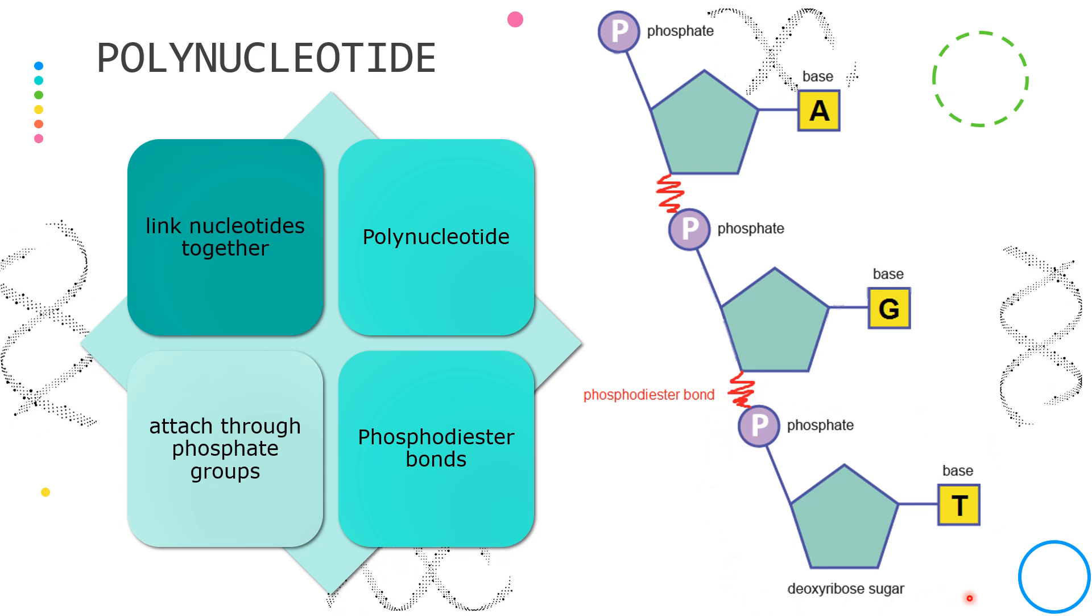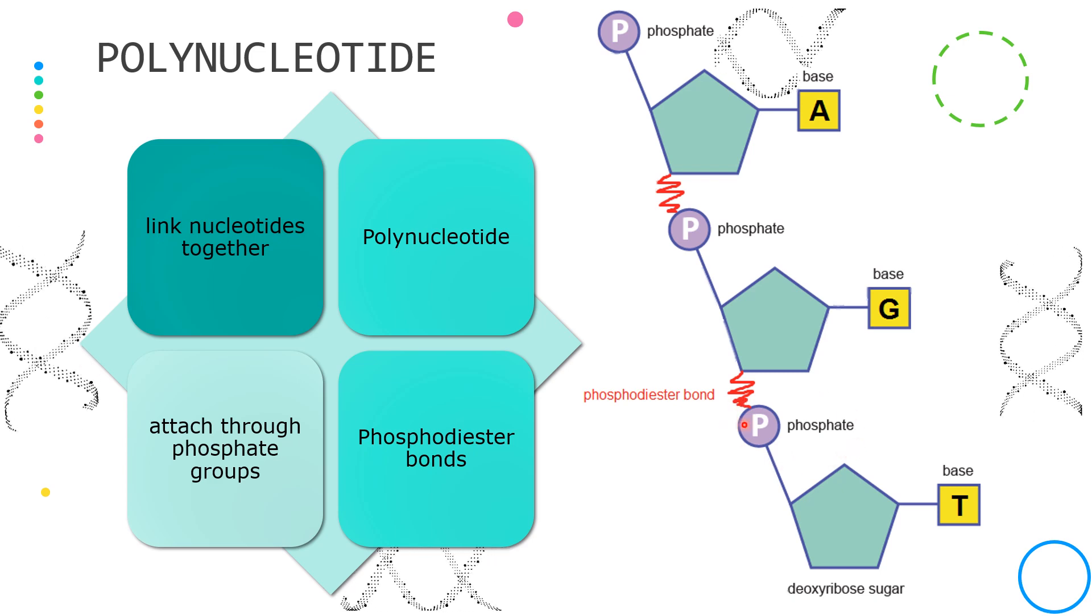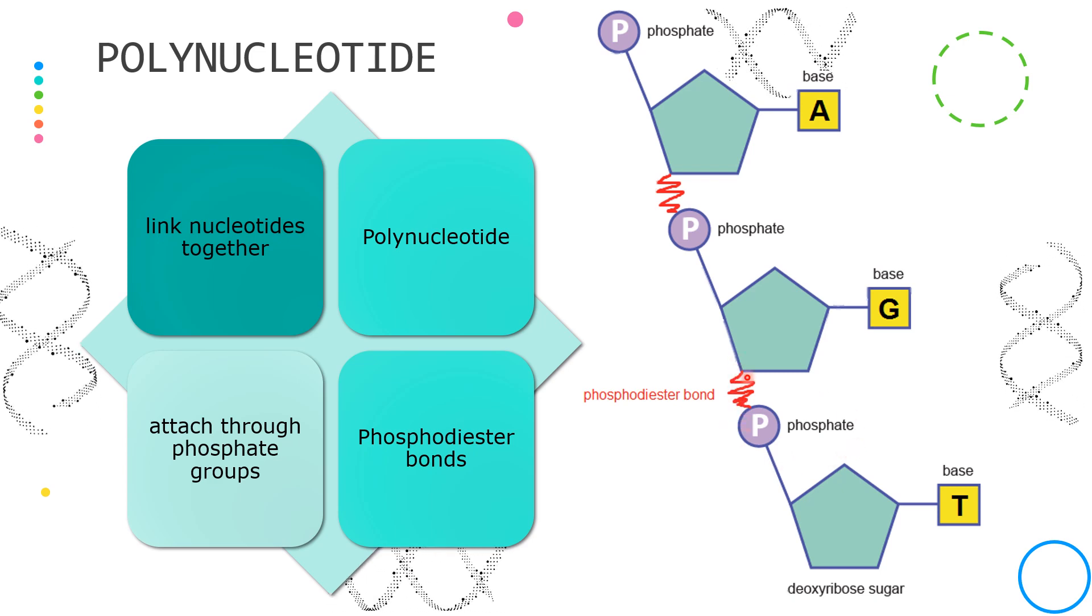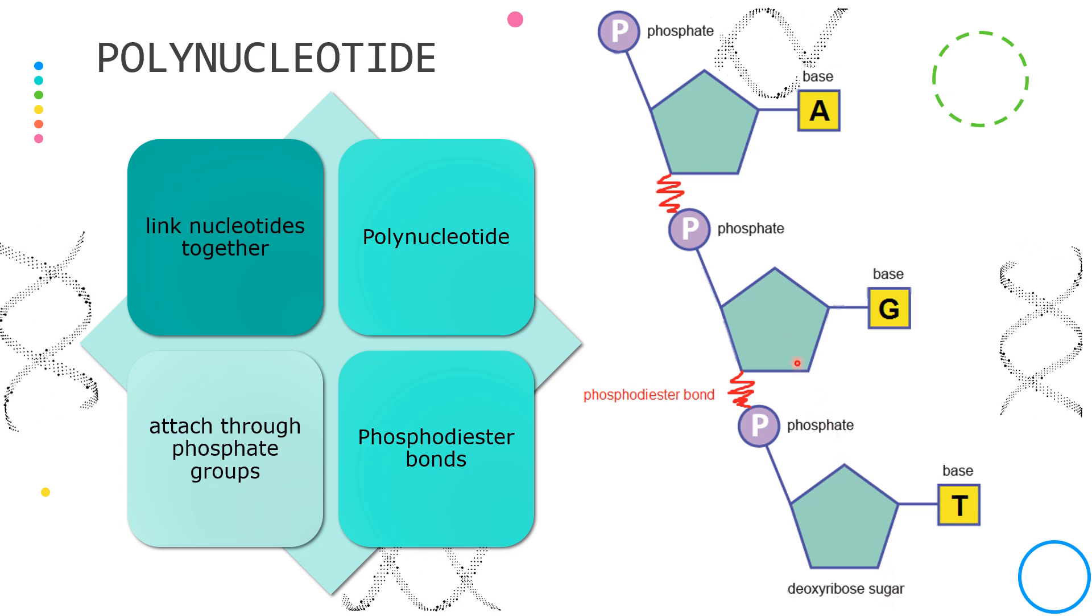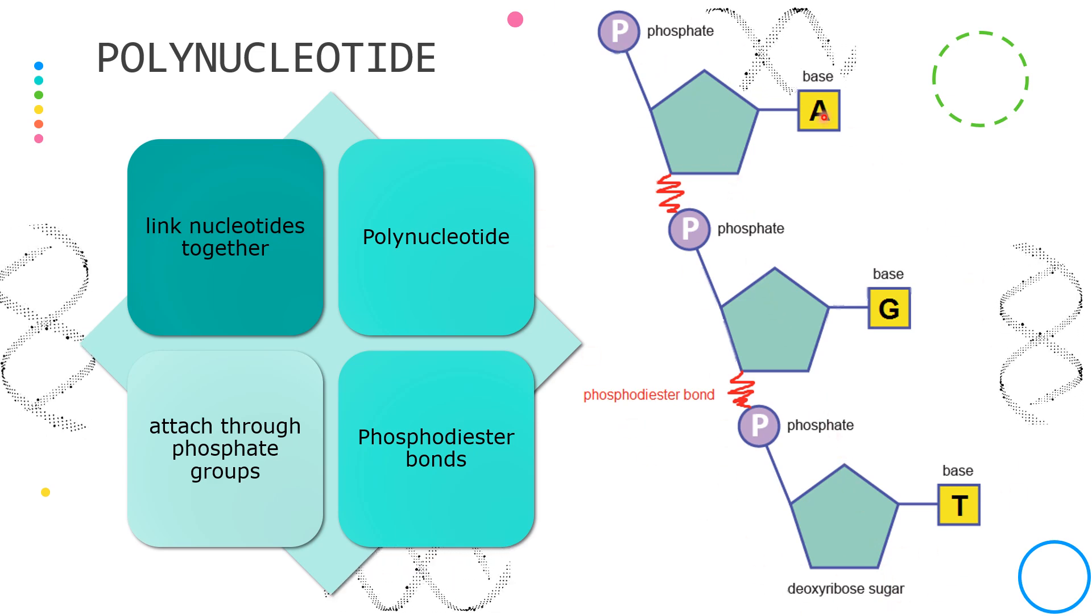One nucleotide is attached to another nucleotide through the phosphate group. The bond is called a phosphodiester bond. Once multiple nucleotides are linked, this is now what we call the polynucleotide.